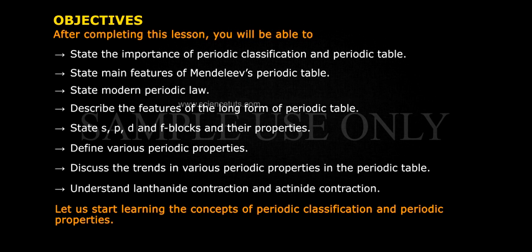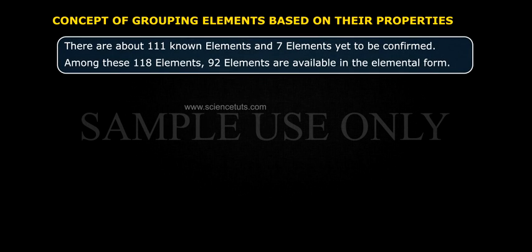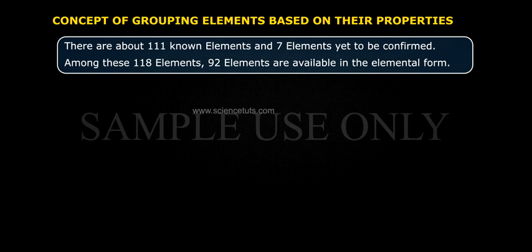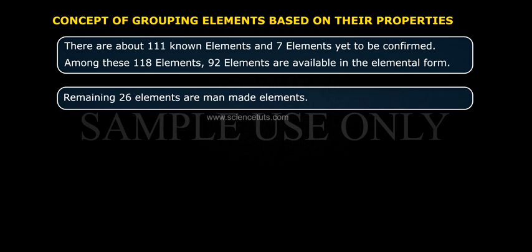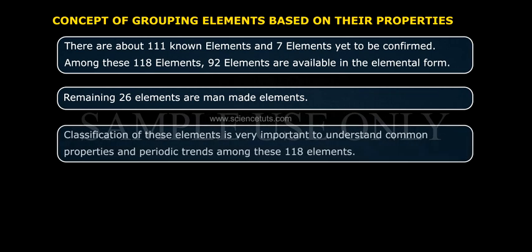Let us start learning the concepts of periodic classification and periodic properties. There are about 111 known elements and 7 elements yet to be confirmed. Among these 118 elements, 92 elements are available in elemental form and the remaining 26 elements are man-made. Classification of these elements is very important to understand common properties and periodic trends among all 118 elements.